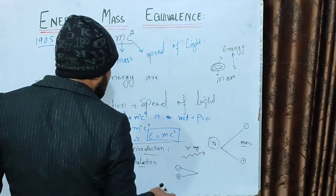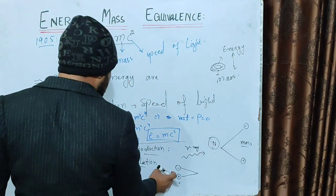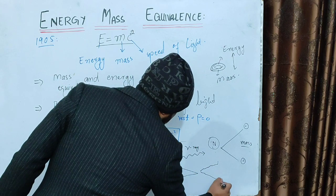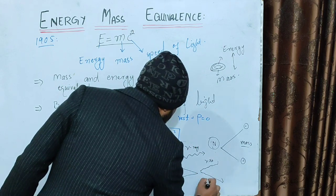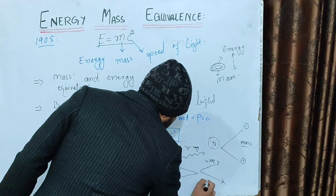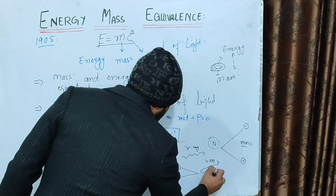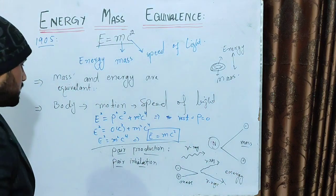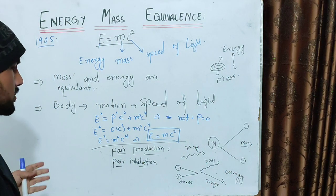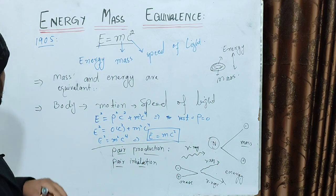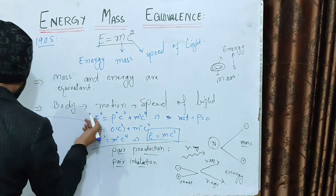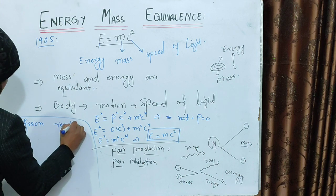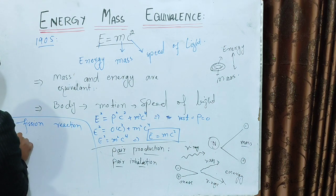The positron is actually the anti-matter equivalent of the electron. Anti-matter carries energy. Mass can be interchanged with energy through processes like fission reaction and fusion reaction.